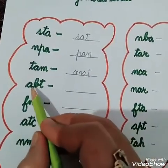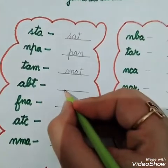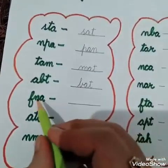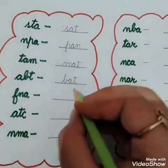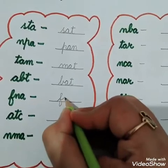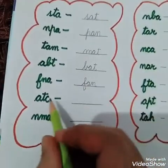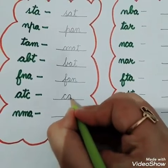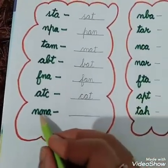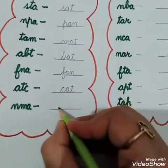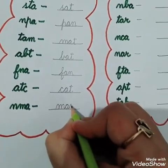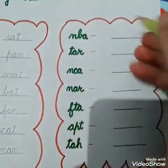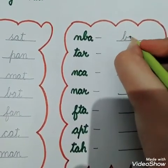Next is A-B-T. The correct word is B-A-T. Next word: F-N-A. The correct word is F-A-N. Next: A-T-G-O. The correct word is G-O-A-T. Next: N-A-M. The correct word is M-A-N. Next: N-B-A. The correct word is B-A-N.